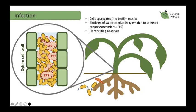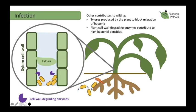Once in the xylem, Ralstonia grows to high cell densities and produces large amounts of exopolysaccharides, which block water flow in the xylem and cause the classic wilting symptoms. Other contributors to wilting include the plant immune response producing tyloses, which block bacterial migration further up the xylem vessels.